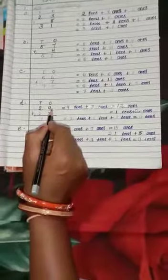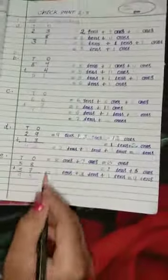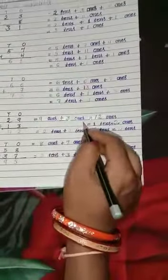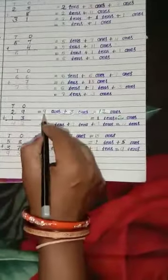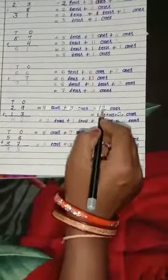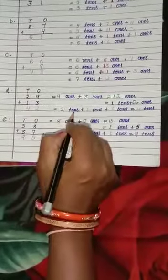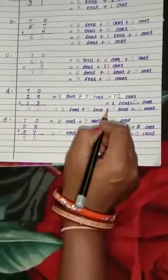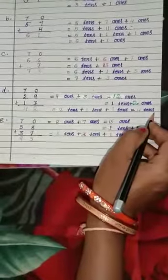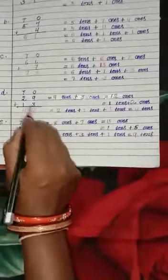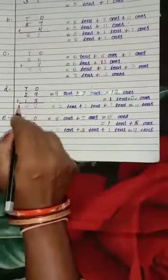Number D: 29 plus 13. Regroup the ones: 9 ones plus 3 ones equal to 12 ones. 12 ones equal to 1 ten plus 2 ones. Then we add the tens: 2 tens plus 1 ten plus 1 ten (carried) equal to 4 tens. So we find 42. 29 plus 13 equals 42.